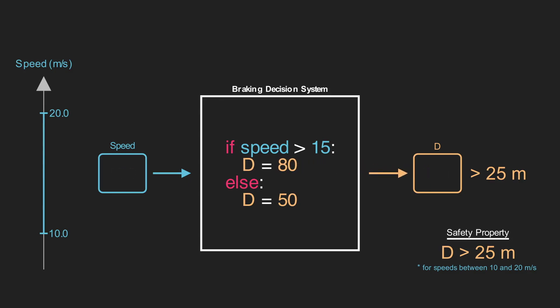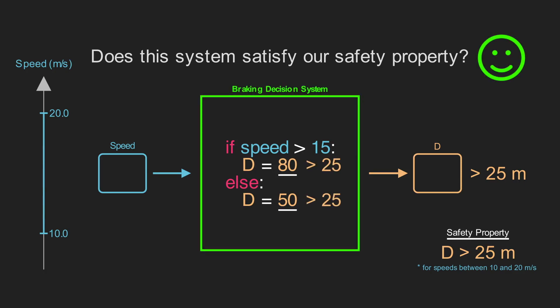Now time for the important question. Does the system satisfy our safety property? In other words, for all inputs between 10 and 20, does the system output a distance greater than 25? Feel free to pause the video now to decide for yourself. The system shown here can only have two outputs, 80 or 50. Since these outputs are both greater than 25, we can easily tell that the system satisfies our safety property.